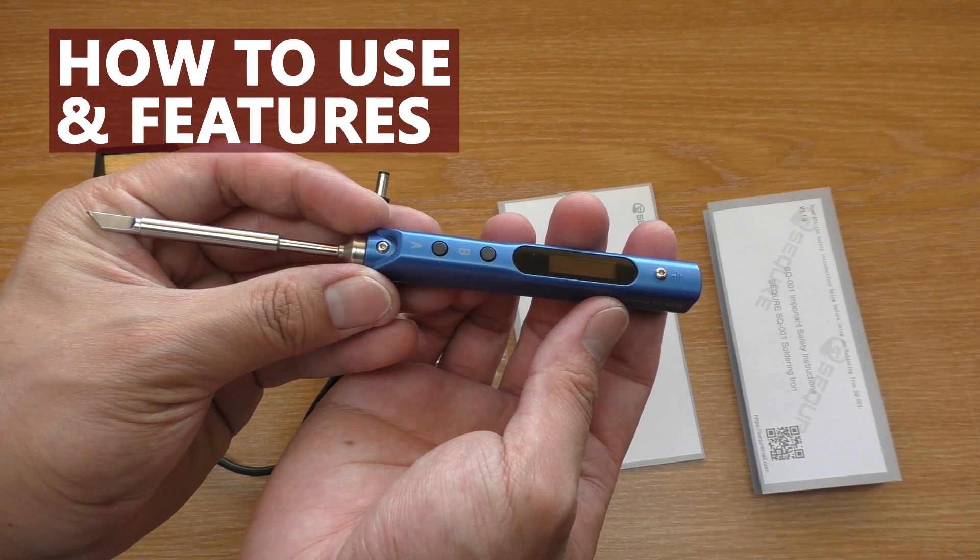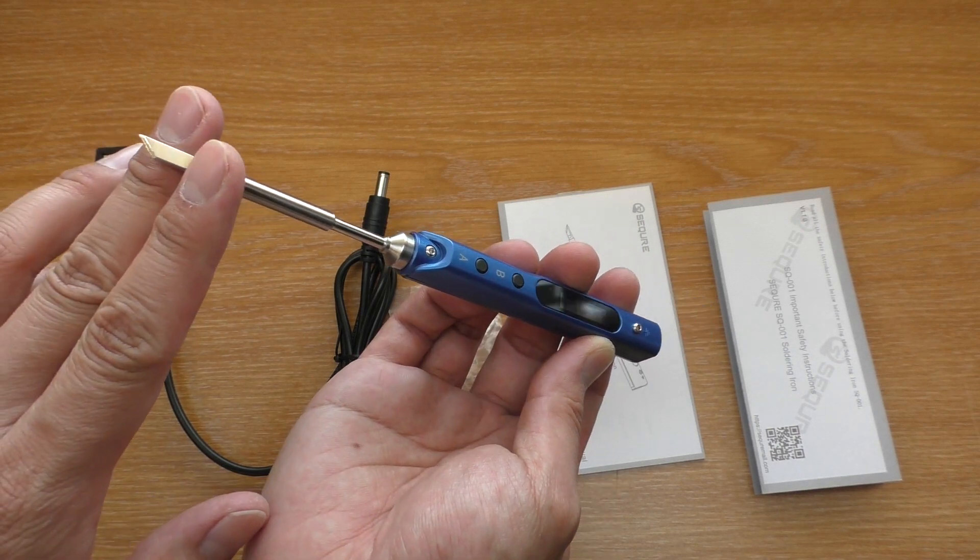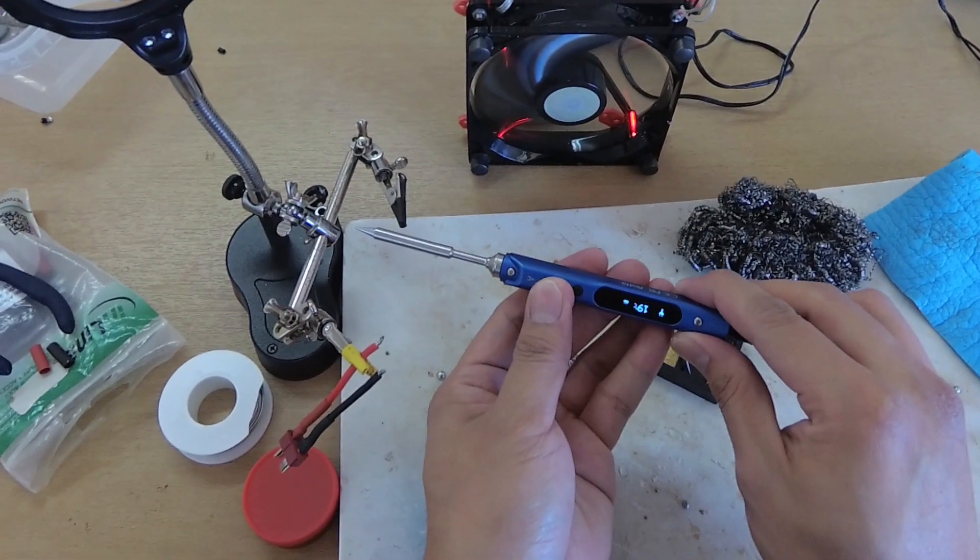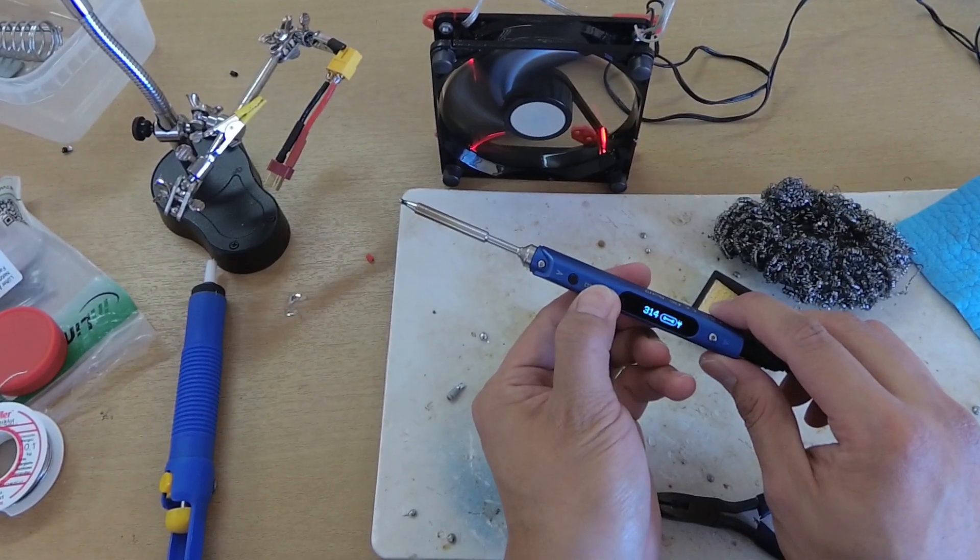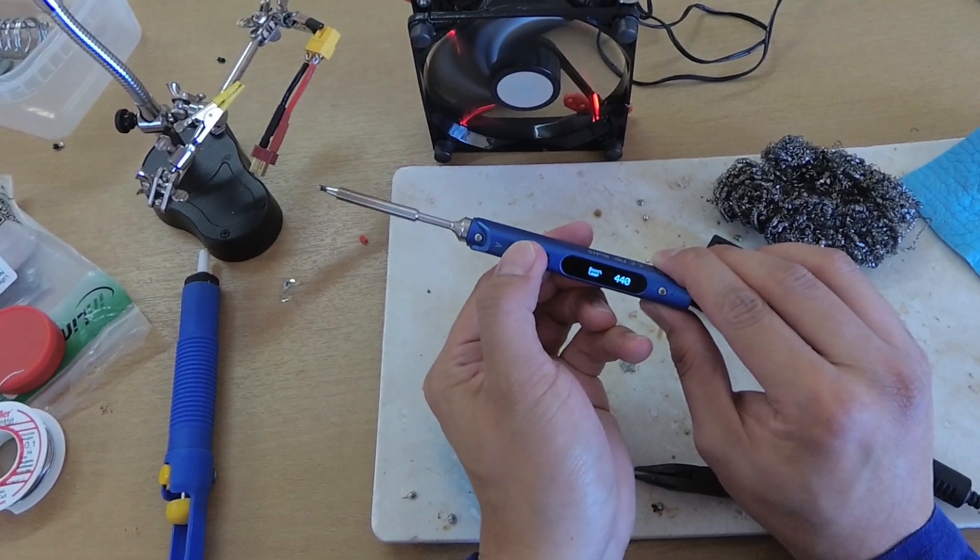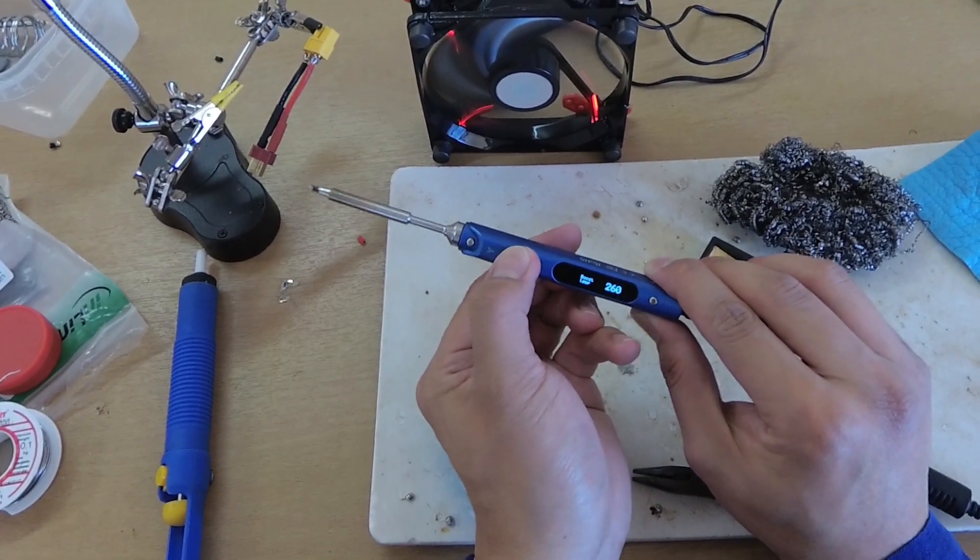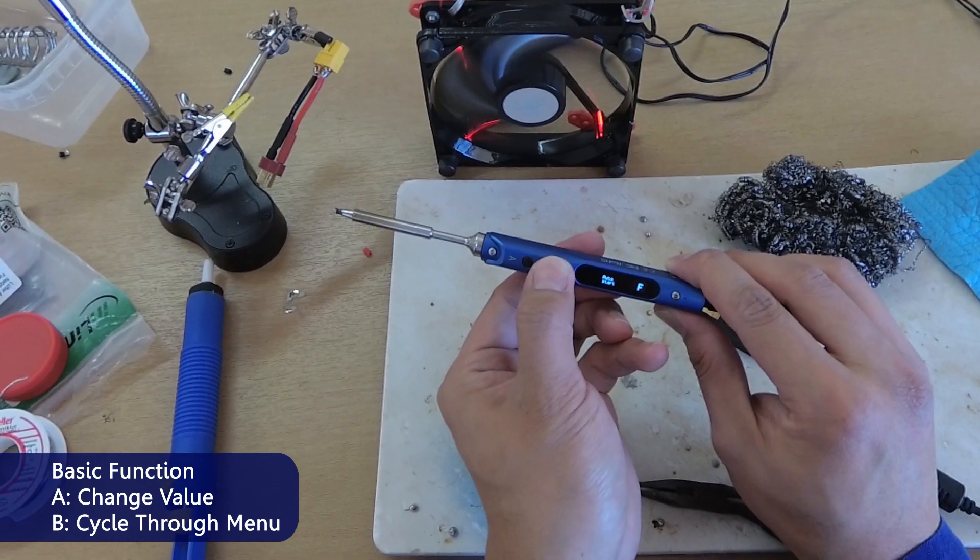It has buttons and screen so it looks pretty complicated but it is actually intuitive to use. At the beginning press A to start heating up the iron. Or B to go into menu. Then press A to enter the menu and change the value. Basically press A to adjust the setting and B to select the menu.